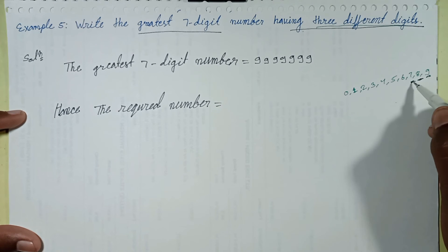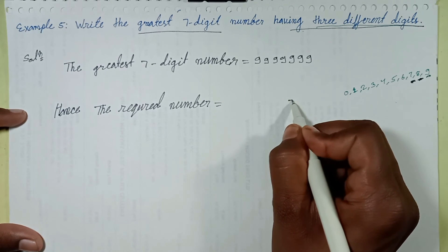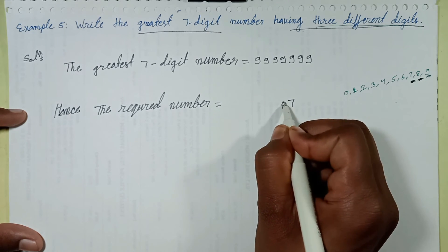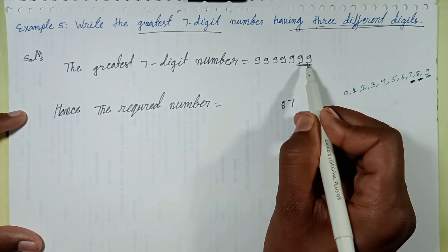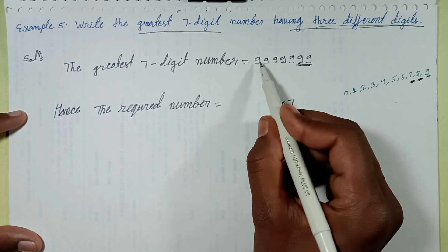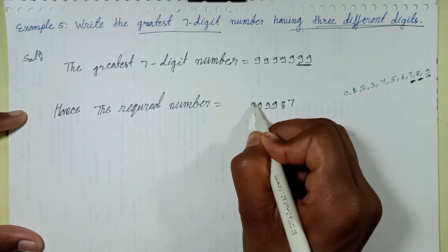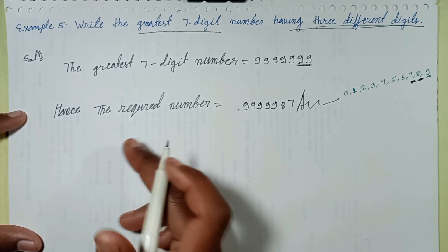Put this digit in the units place and this number in the tens place. For a 7-digit number: 7 and 8 in units place and 8 in the tens place. Total 7-digit number — replace this number: 1, 2, 3, 4, 5 — five times 9. So 1, 2, 3, 4, 5 — this is the required answer.